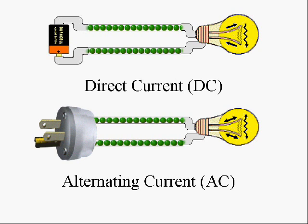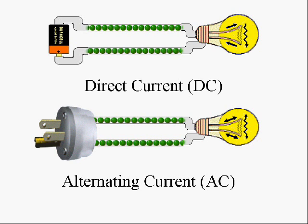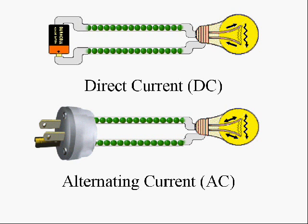The alternating current that we use in our homes is 60 cycles per second. So in other words, the electron moves back and forth in one sixtieth of a second. So it repeats that cycle 60 times per second.